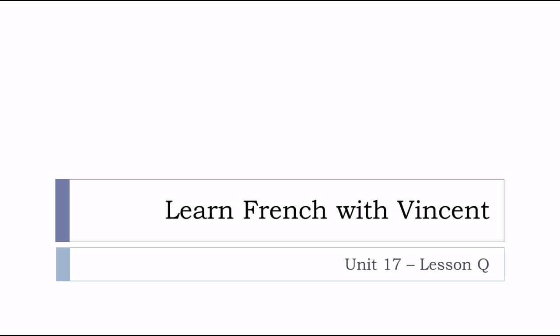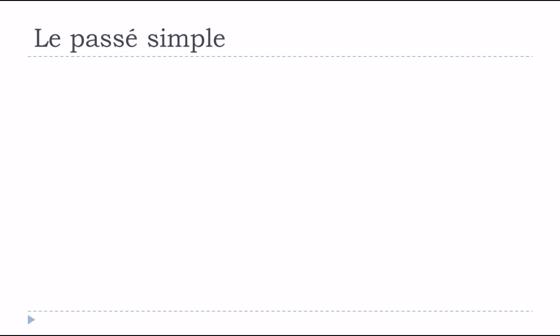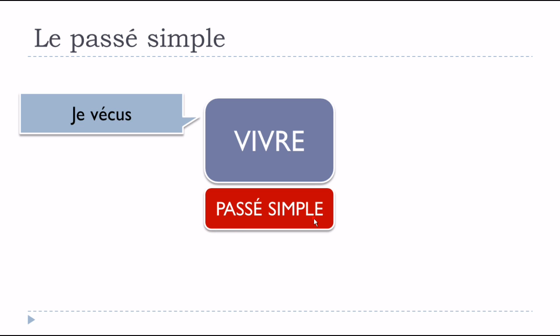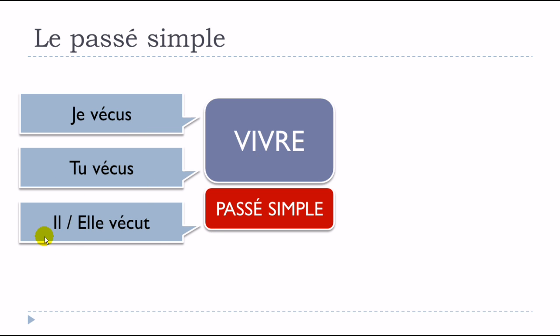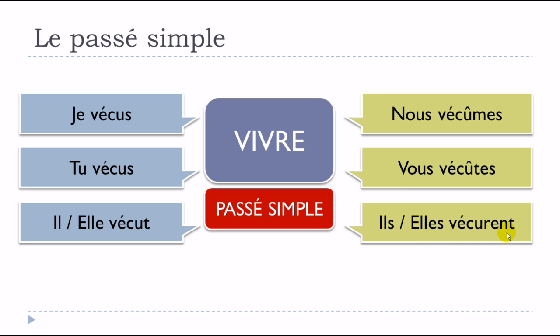Bonjour à tous and welcome to Learn French with Vincent. This is Unité 17, Leçon Q — we'll see the verb VIVRE, to live, and its forms from le passé simple. Je vécus, tu vécus, il vécut, elle vécut, nous vécûmes, vous vécûtes, ils vécurent, elles vécurent.